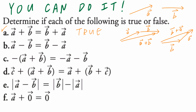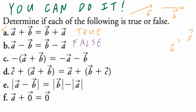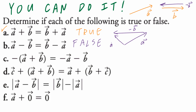Part B: vector A minus vector B equals vector B minus vector A. I don't think this is true — the answer should be false. Drawing a diagram to show the counter example: if I look at A minus B, B is pointing to the right so negative B will be pointing to the left. So there's negative B, giving resultant vector A minus B. On the right-hand side, B minus A: vector B pointing this way, negative vector A would point this way. Notice how B minus A is not the same as vector A minus B, so the answer is false.